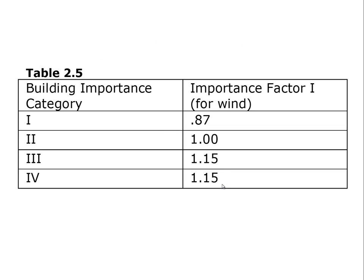In accounting for issues of this sort, we have building categories with importance factors. These are like additional margins of safety, in addition to the usual load factors of 1.2 for dead load and 1.6 for live load and 1.6 for wind load. In addition to the 1.6 normally applied for wind load, we also apply this importance factor as an additional load factor.